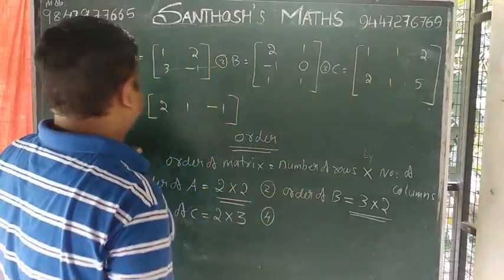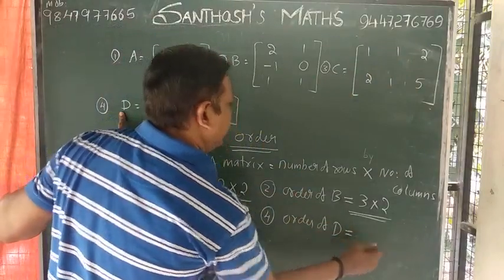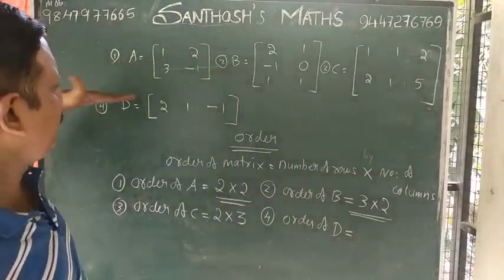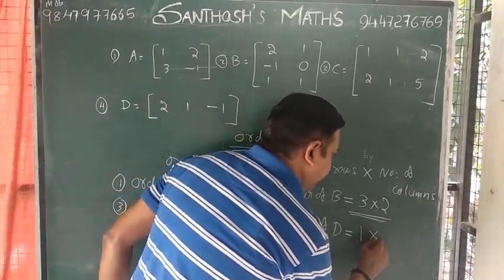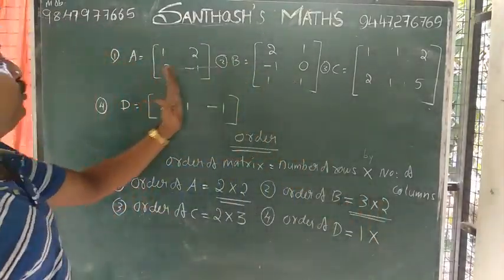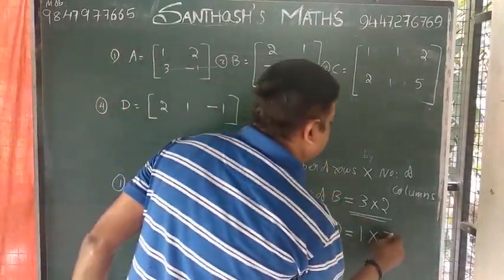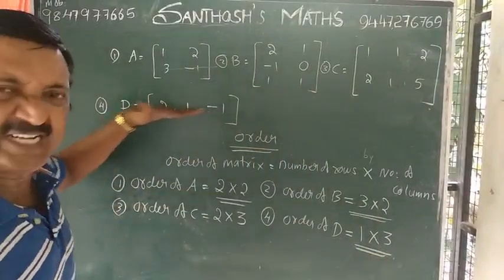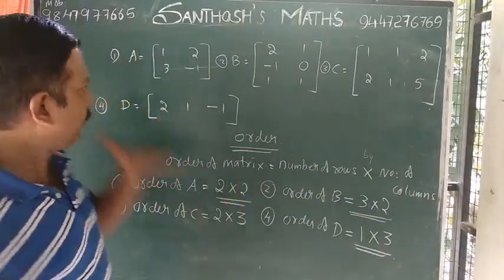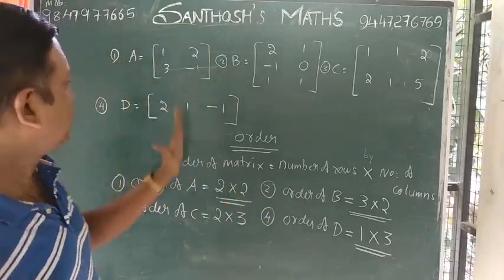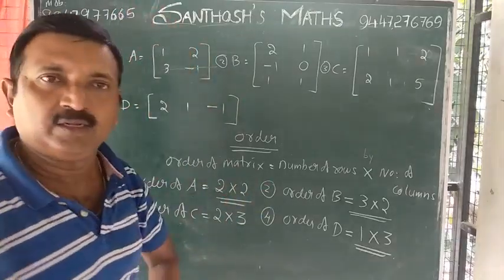Order of D: it has 1 row by 3 columns — 1 by 3 order matrix.